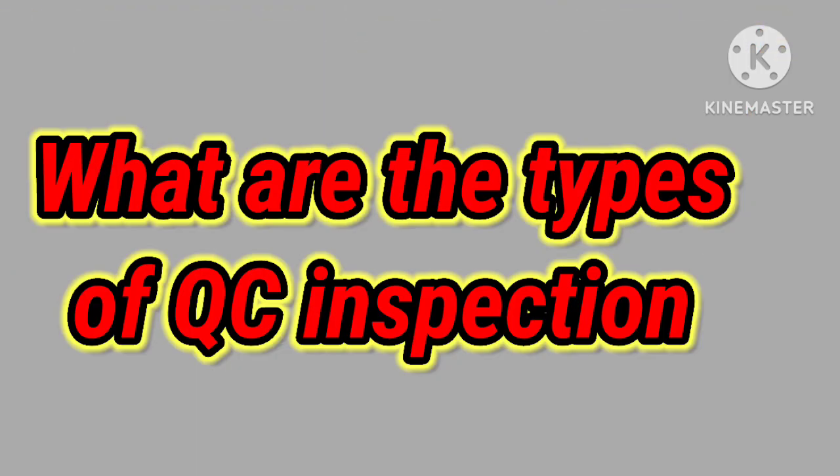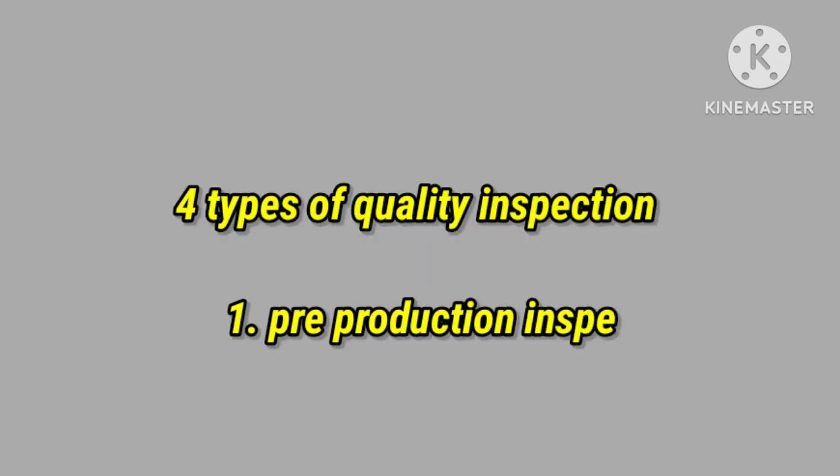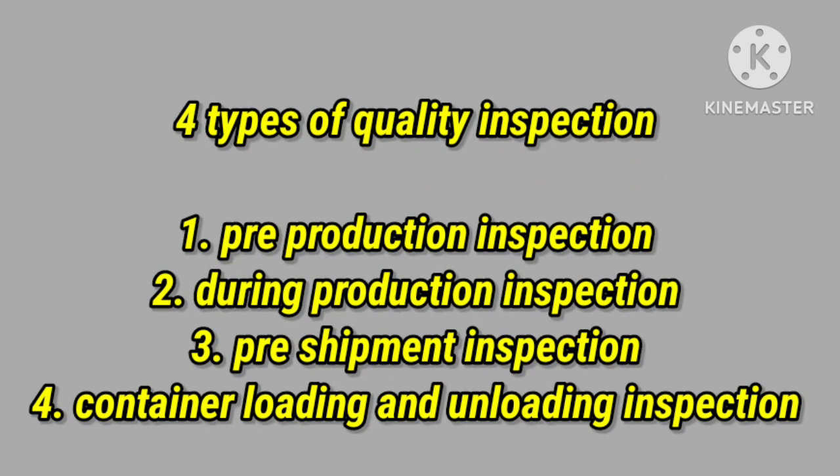दूसरा question है: What are the types of QC inspection? यानि QC inspection के कितने तरह के होते हैं? QC inspection के 4 तरह के होते हैं। पहला होता है Pre-Production Inspection — इसमें हम production होने से पहले parts को check करते हैं, उसे हम बोलते हैं Pre-Production Inspection।